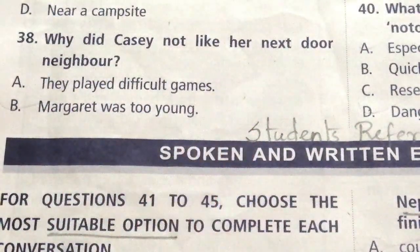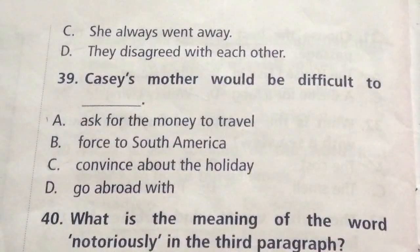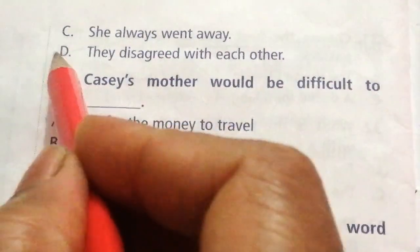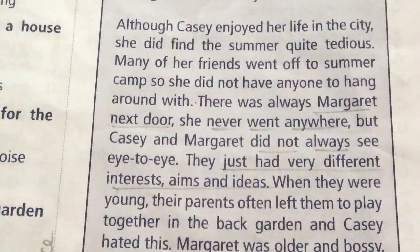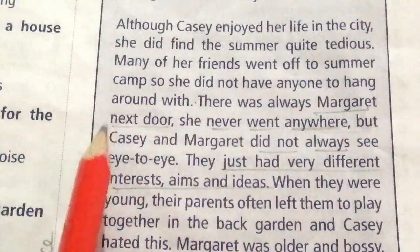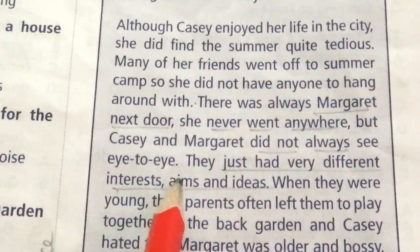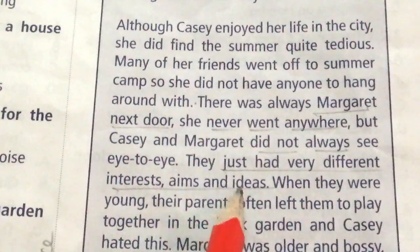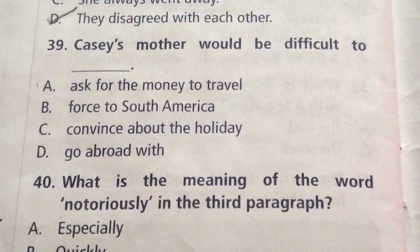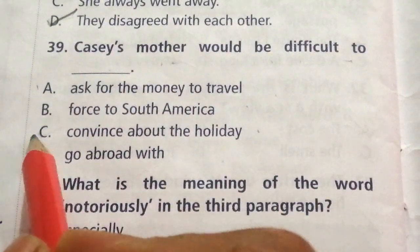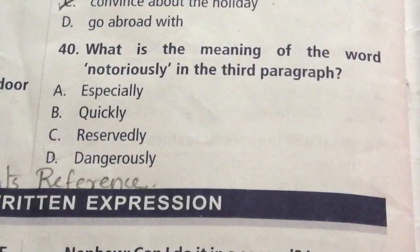Question 38: Why did Casey not like her next door neighbor? Options: They played difficult games, Margaret was too young, she always went away, they disagreed with each other. The answer is D: They disagreed with each other. The answer is given here: Margaret next door — she never went anywhere, but Casey and Margaret did not always see eye to eye; they just had very different interests, aims and ideas. Question 39: Casey's mother would be difficult to dash. Options: Ask for money to travel, force to South America, convince about the holiday, go abroad with. The answer is C: Convince about the holiday.